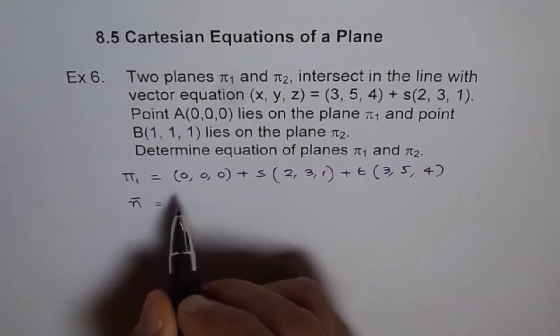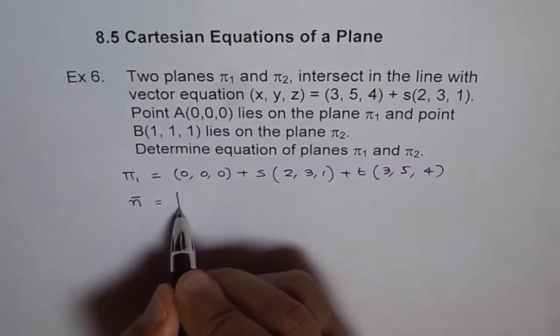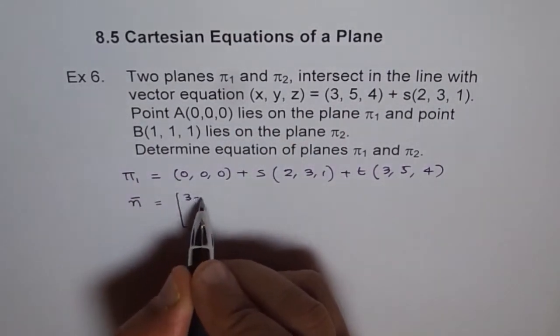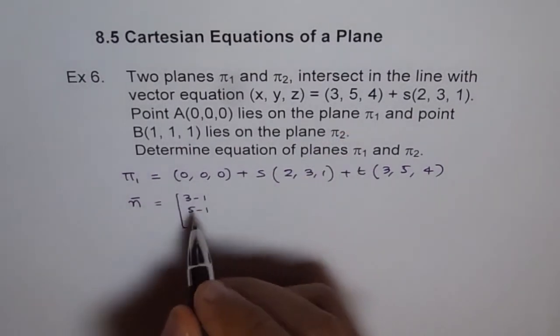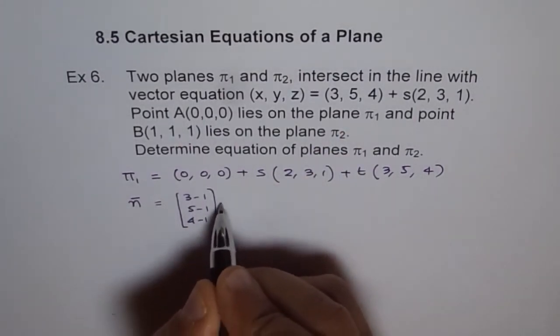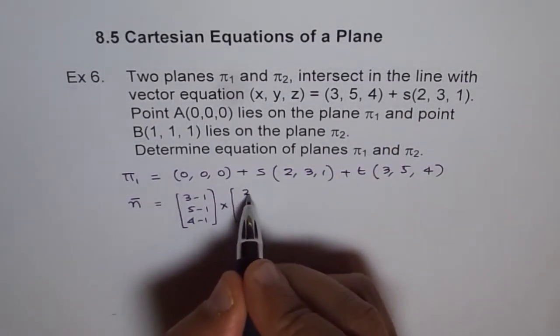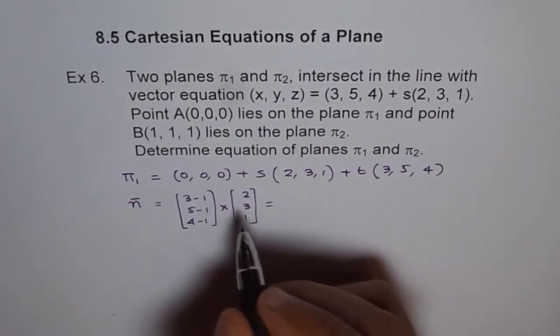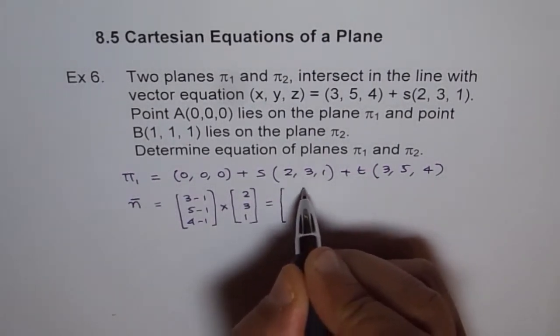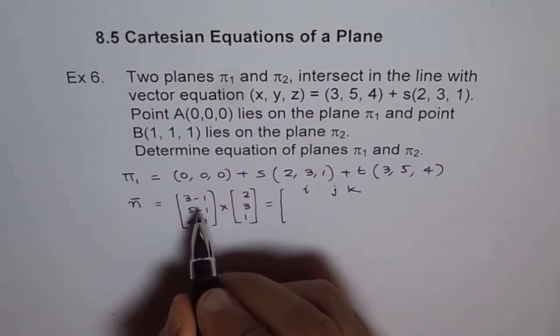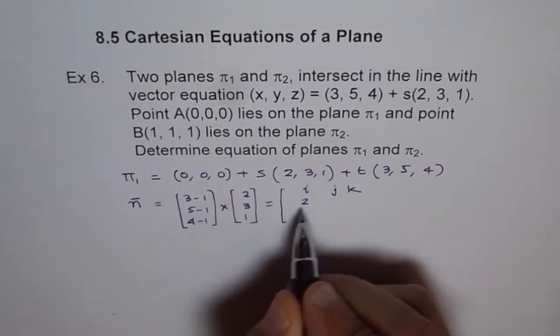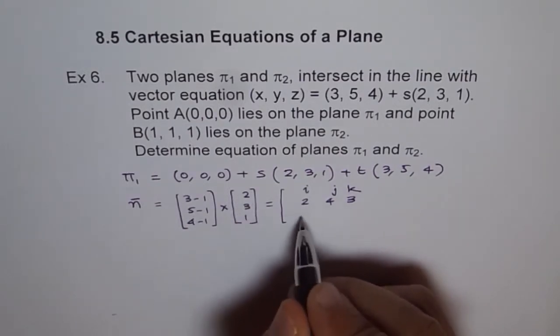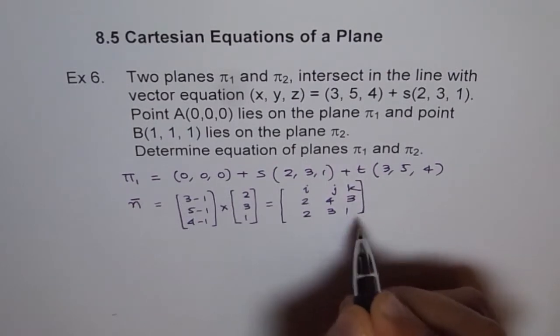The normal will be the cross product. We have already this vector and the other vector, which we can find between B and the point. So the normal vector should be the cross product between this point, we are using B now. So (3-1, 5-1, 4-1), cross product of the direction (2,3,1). That will give us the normal vector.